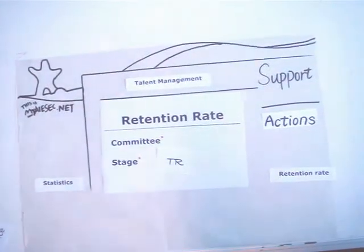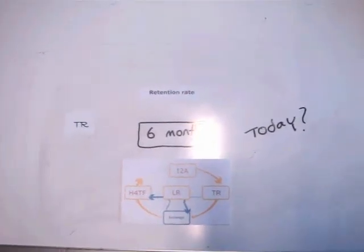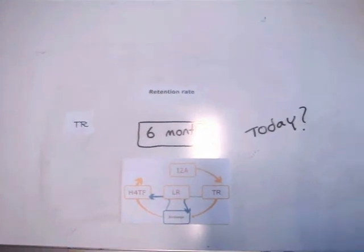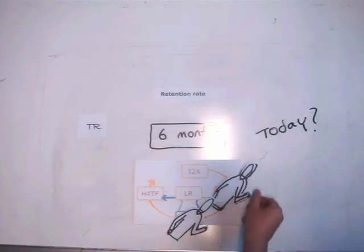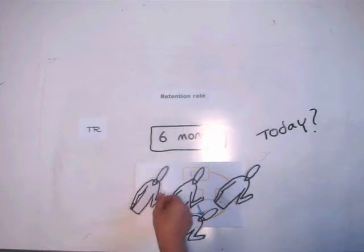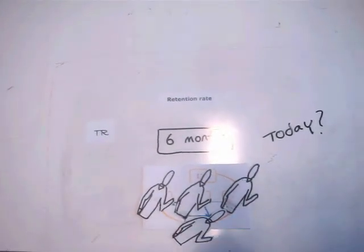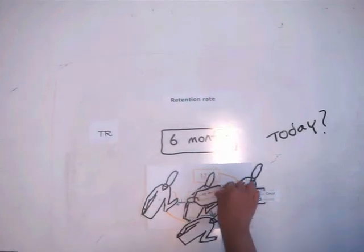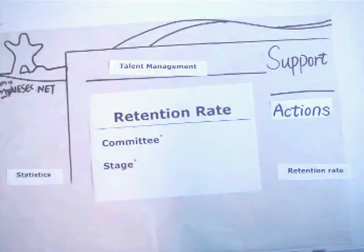You can also see the retention rate of members who Take Responsibility on myisaac.net. This refers to members who were in the Taking Responsibility stage six months ago and then went on exchange, took a leadership role, headed for the future, or stayed in Taking Responsibility, and have also logged into myisaac.net at least once in the past three months. This number tells you how satisfied your members are and lets you plan your actions accordingly.